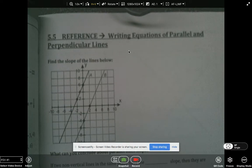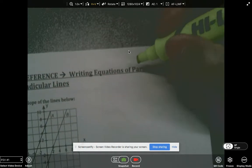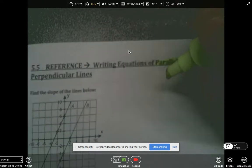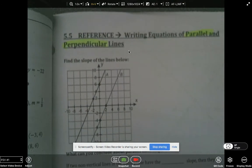Alright, in the next section 5.5 we're going to look at writing equations and we're going to continue with the point-slope format and changing that into slope-intercept form y equals mx plus b. But now we're going to look at trying to write equations that are parallel or perpendicular to other graphs or equations.